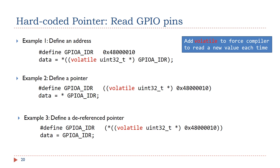Make sure to add the keyword volatile if we want to force the compiler to read a new value each time. The keyword volatile has been discussed in detail in the textbook. It prevents the compiler from making false optimizations during the compiling process.